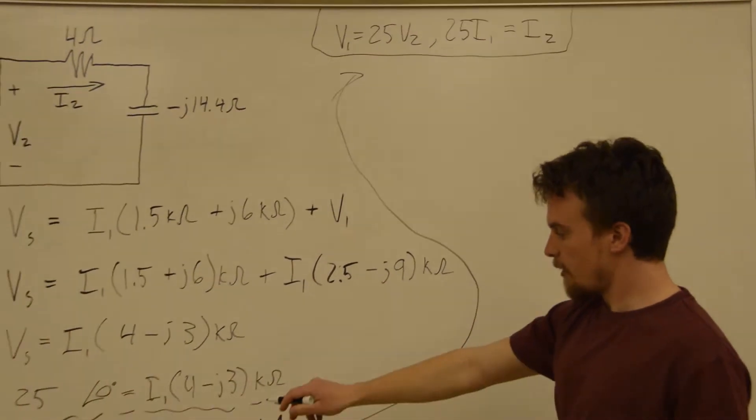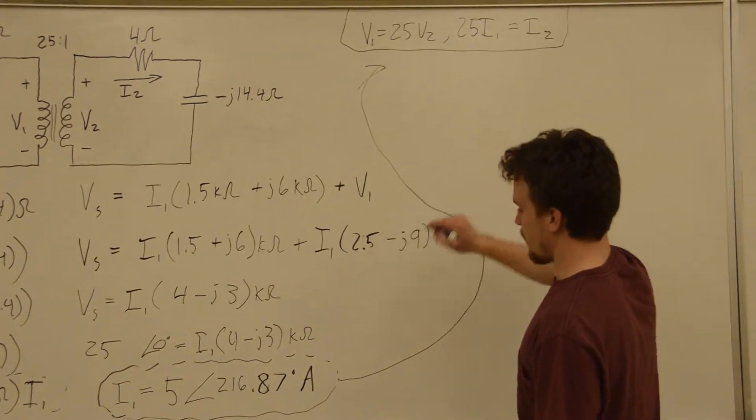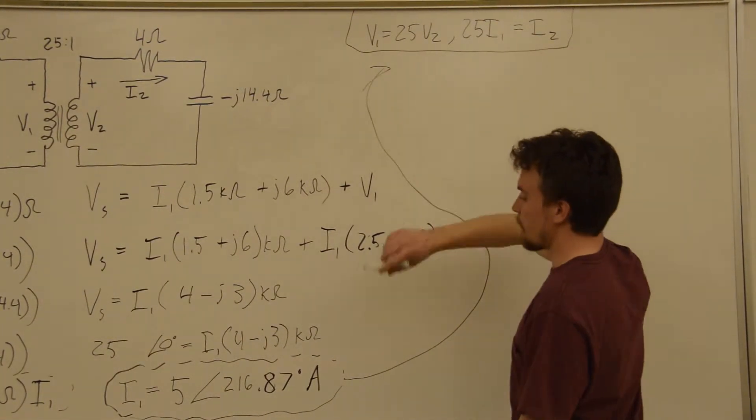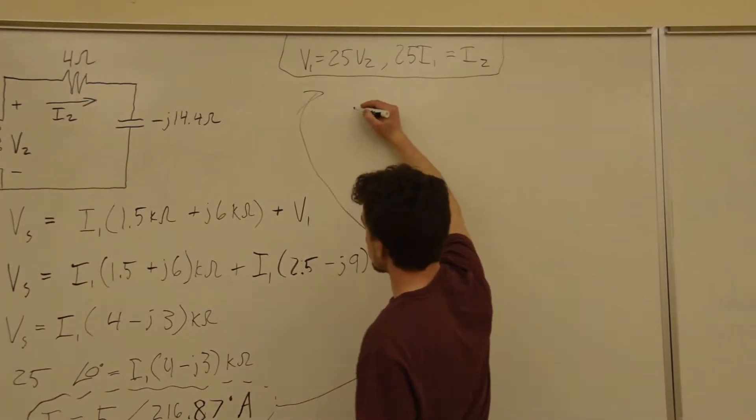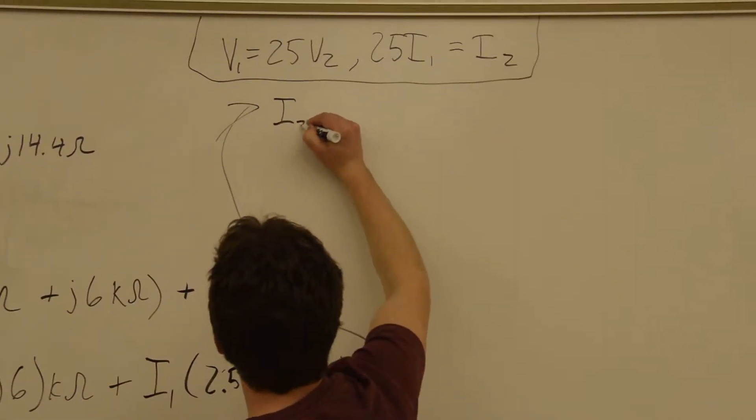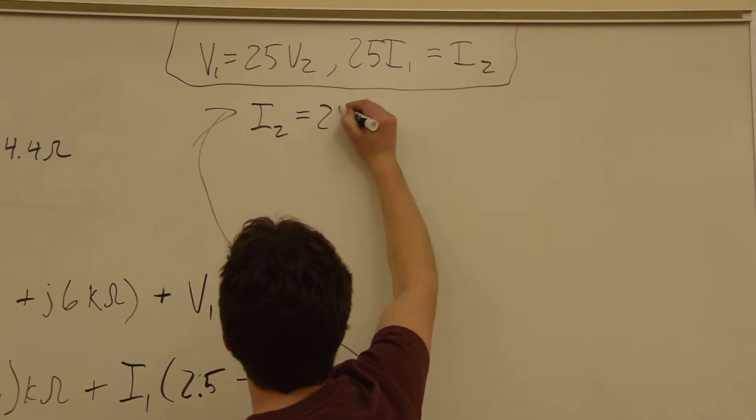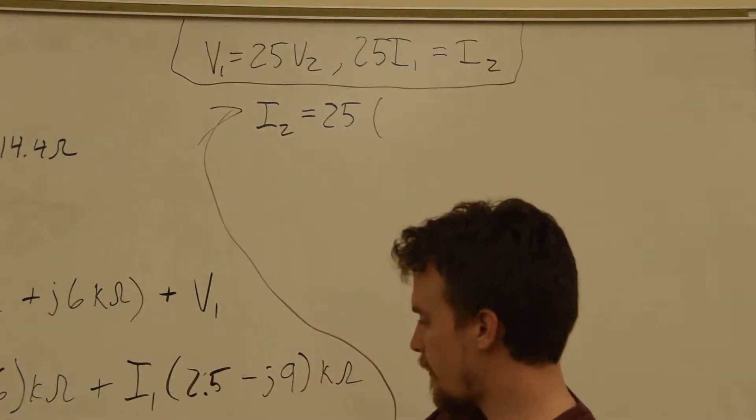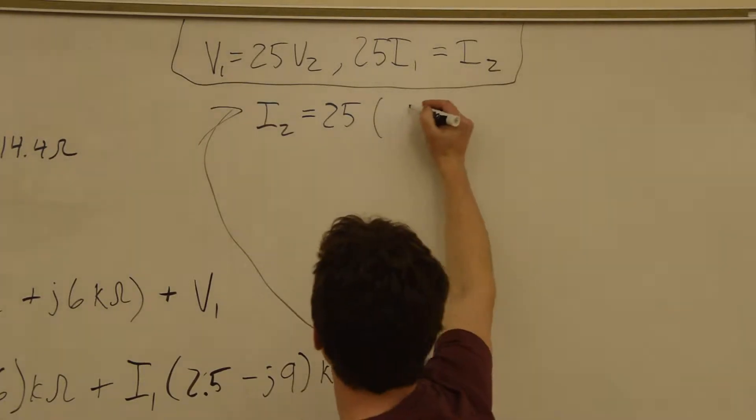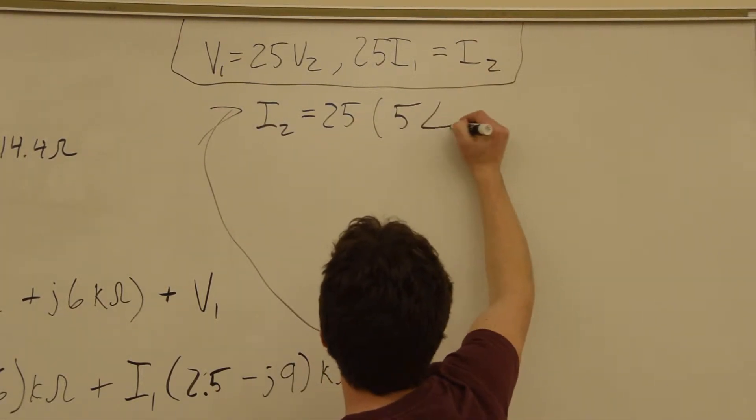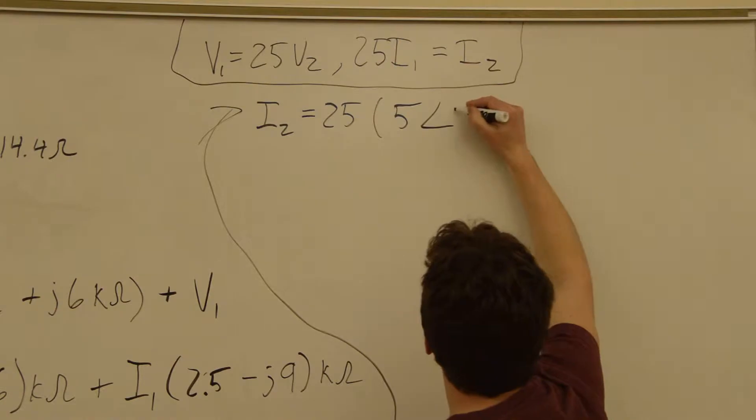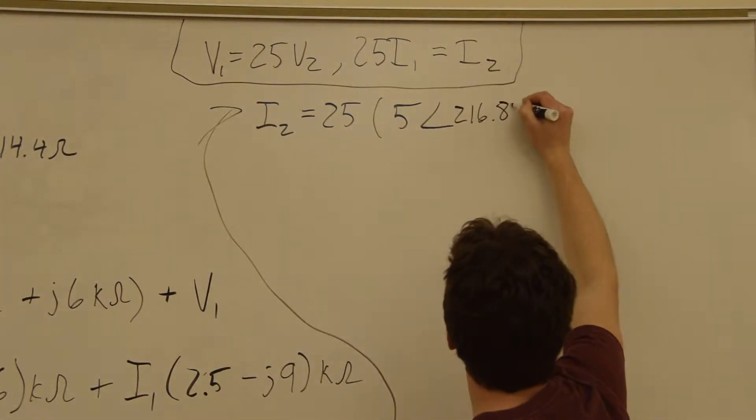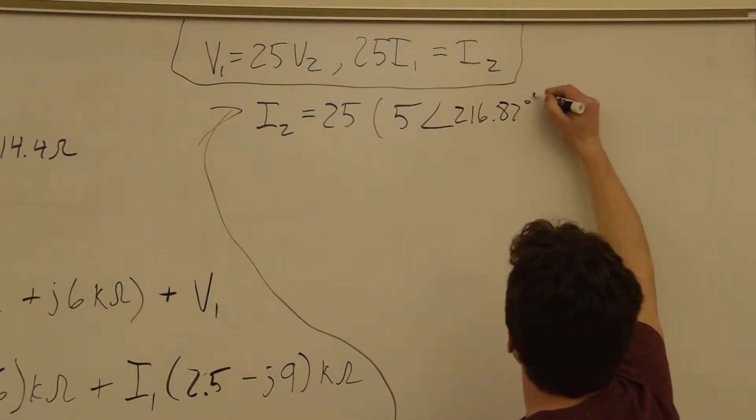So, the easiest one to get will be I2. Since I2 is just equal to 25 times I1. And we have a value for I1. So, I2 is going to equal 25 times 5 with a phase shift of 216.87 degrees. This is in amps.